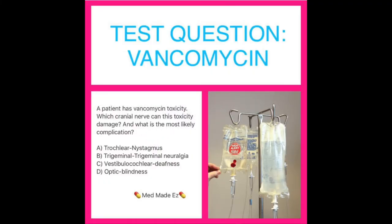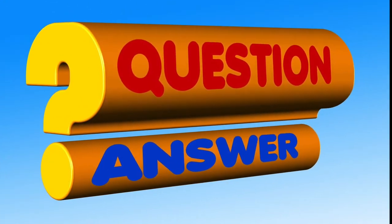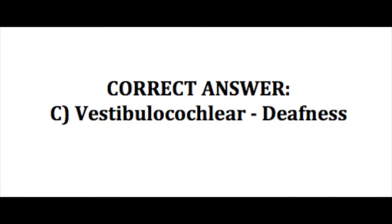A patient has vancomycin toxicity. Which cranial nerve can this toxicity damage, and what complication is most likely? A: trochlear nystagmus, B: trigeminal neuralgia, C: vestibulocochlear deafness, or D: optic blindness. For those of you who answered C, vestibulocochlear deafness — you are correct.